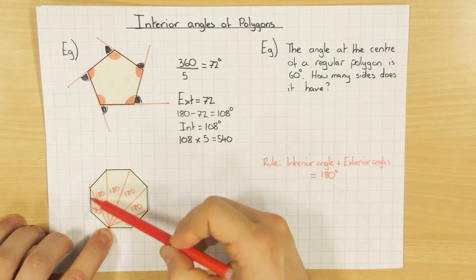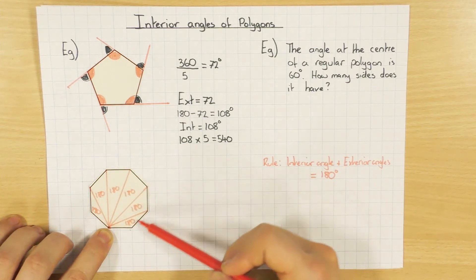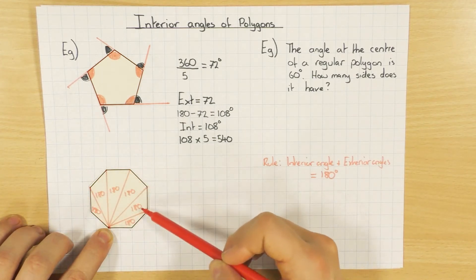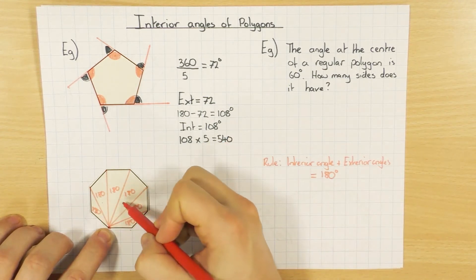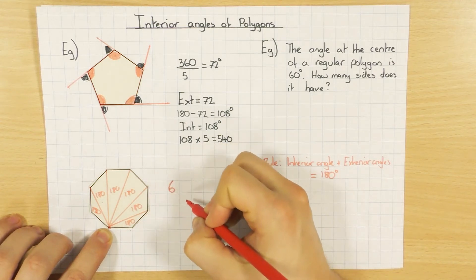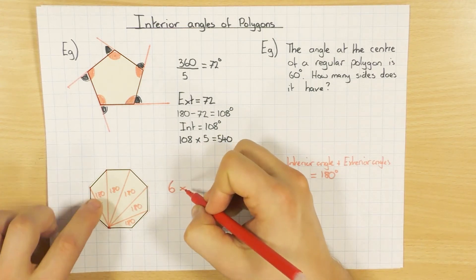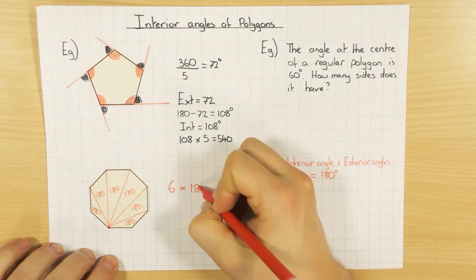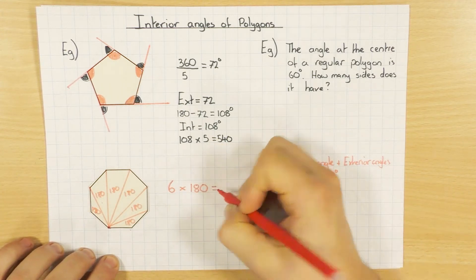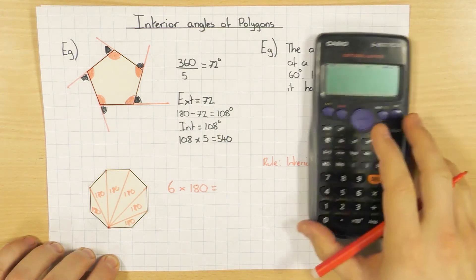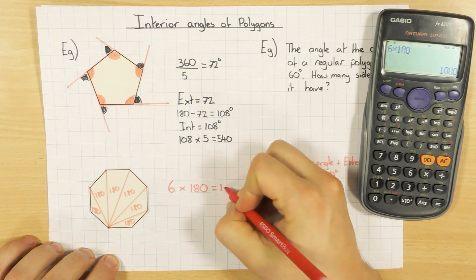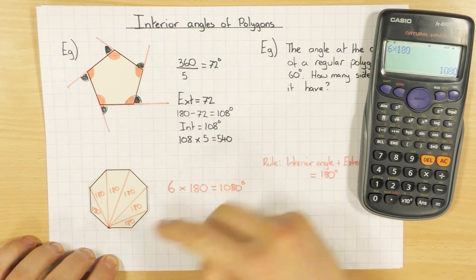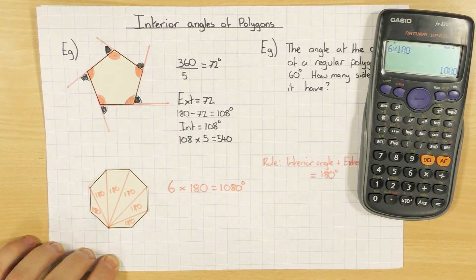To work out the sum of all the interior angles, I count: one, two, three, four, five, six triangles. I've got six triangles, and I know they all have interior angles of 180. So I just do six times 180, which is 1,080 degrees. The sum of all the interior angles adds up to 1,080 degrees.